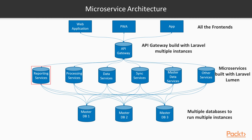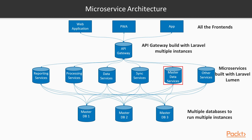What microservices do is divide your larger application into smaller processing units, each running separately — maybe on separate servers or separate instances. All these units communicate with each other by way of APIs, creating a loosely coupled architecture that depends on APIs for communication.